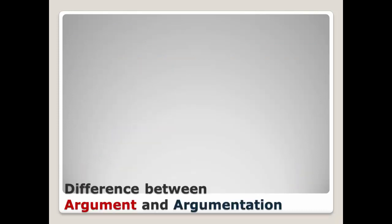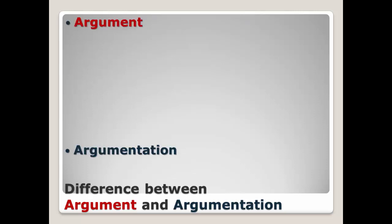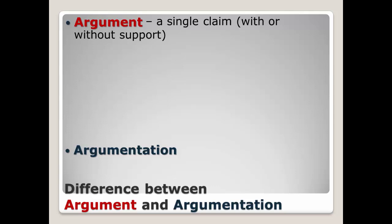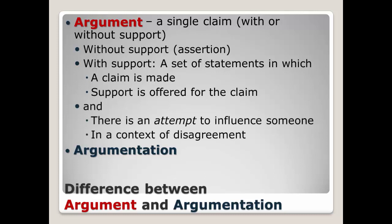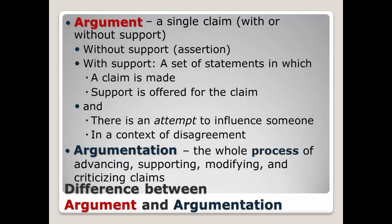Last concept: what is the difference between an argument and argumentation? An argument is a single claim. It can be an assertion, meaning it is offered on its own without any support, or it can be backed up by support, which are secondary claims. In both cases, the claim is used to attempt to influence or persuade someone in the context of a disagreement where a decision will be made. Argumentation, however, is the entire process of advancing, supporting, modifying, and criticizing claims.